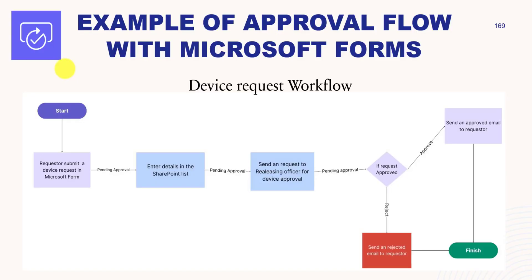When a user or requester submits a device request in Microsoft Forms, the response details will be entered into the SharePoint list, i.e. the device request list. Next we will send an approval request to the releasing officer of devices. Once the releasing officer accepts the approval request, we will send an approved email to the requester; otherwise we will send a rejected email to the requester.